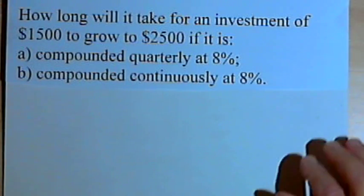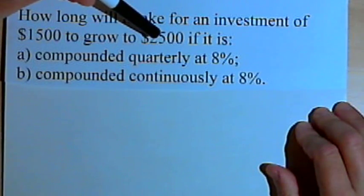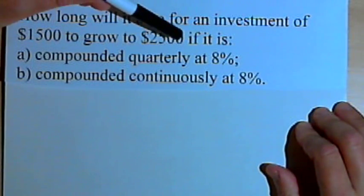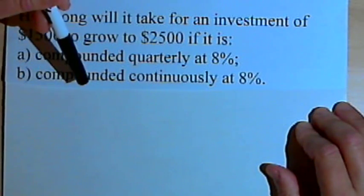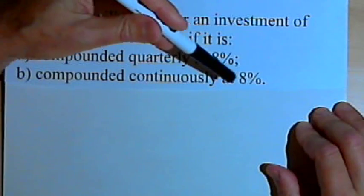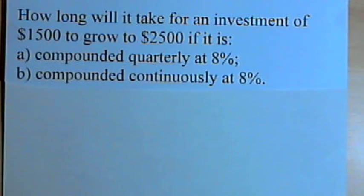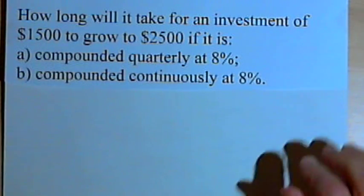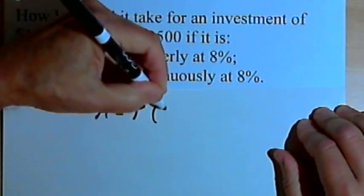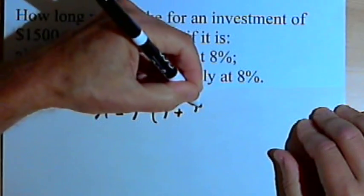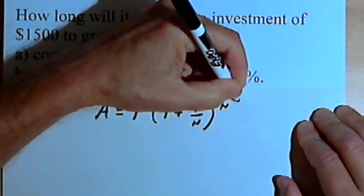It says how long will it take for an investment of $1,500 to grow to $2,500 if it is compounded quarterly at 8% and compounded continuously at 8%. We'll start out with the compounded quarterly part of this. We've got a formula for compounded interest. That's A equals P times 1 plus r over n raised to the nt power.